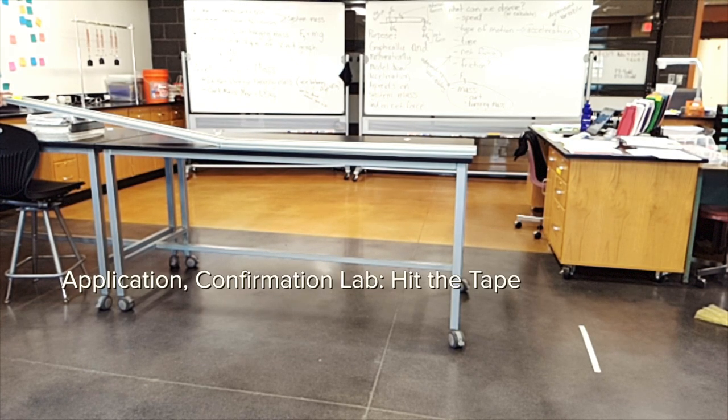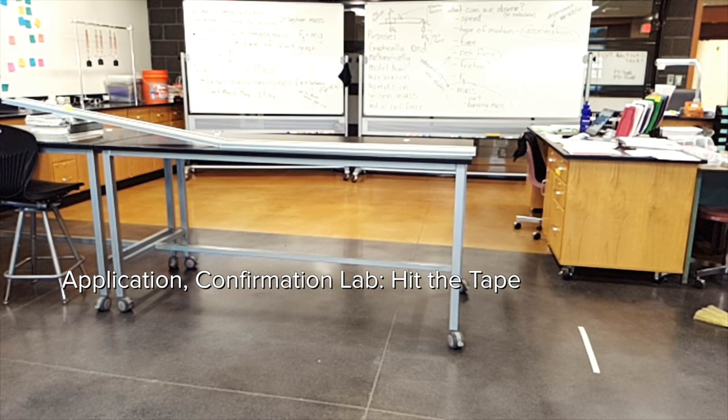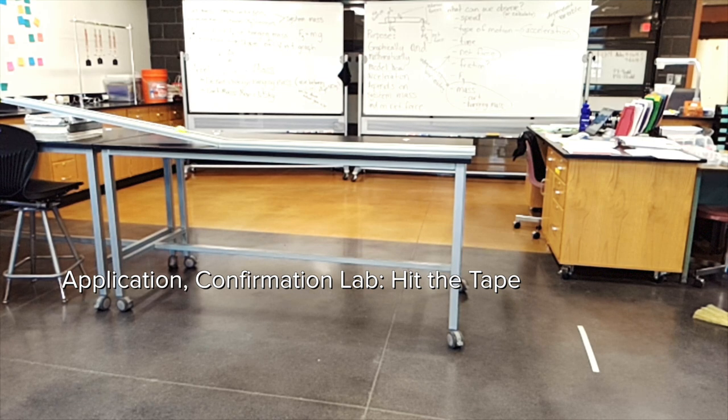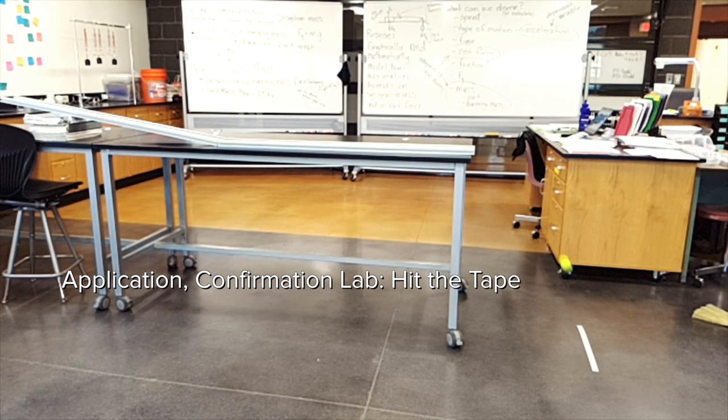An example of an application confirmation lab is our hit the tape lab. We do this lab to wrap up horizontal projectiles. The students set up a ramp to flat track setup and without allowing the marble to shoot off the table they collect data and figure out where on the floor the marble will hit when it's allowed to.